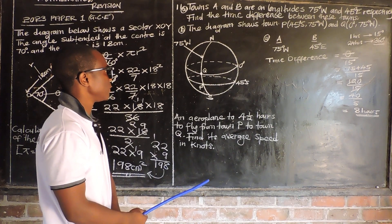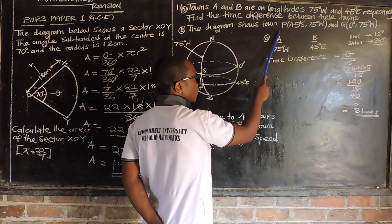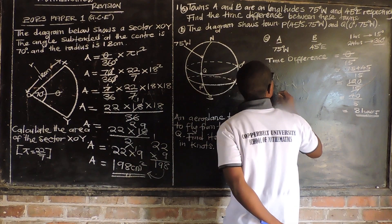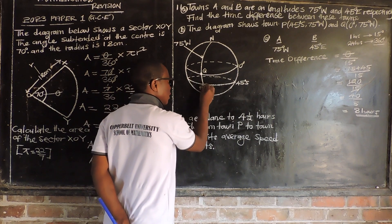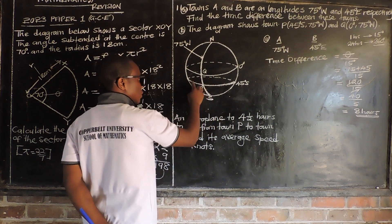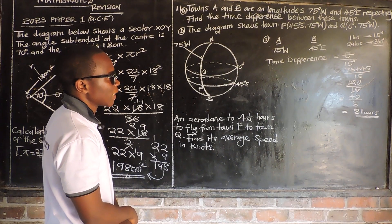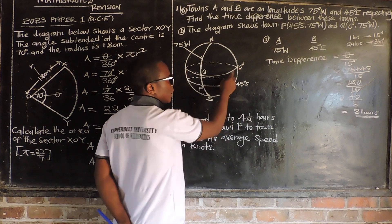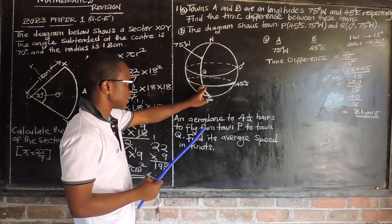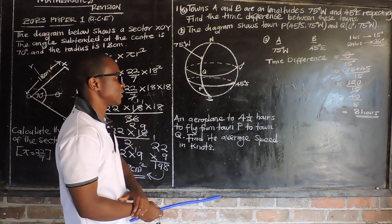Now let us look at part B. The diagram shows town B, which is on latitude 45 degrees south, longitude 75 degrees west. Then town Q is on latitude 0 degrees, longitude 75 degrees west. So town B and town Q are on the same longitude, which is 75 degrees west, but different latitudes.